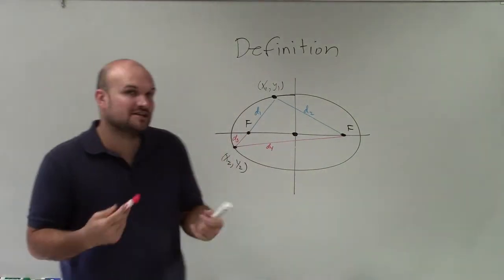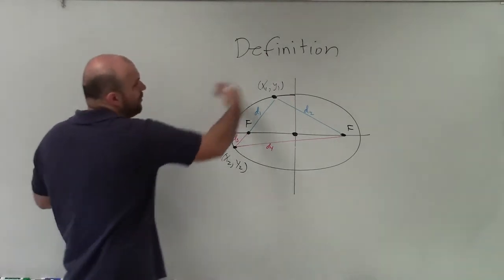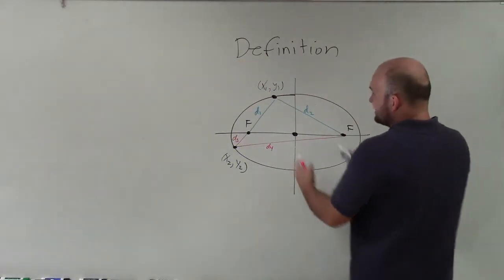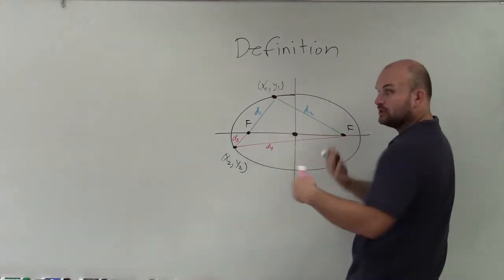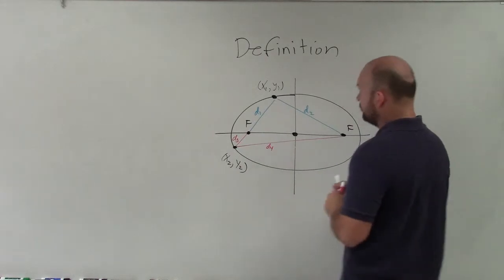So basically, the definition of an ellipse says that for any point on the ellipse, it doesn't matter where the point is, the sum of the two distances from your point to the two foci, which we'll learn how to determine, is always going to be equivalent.